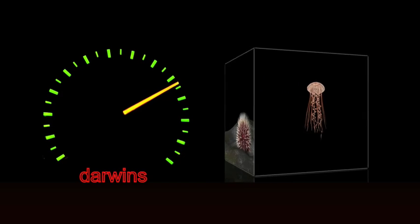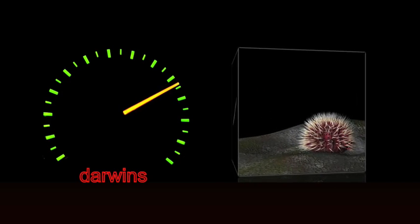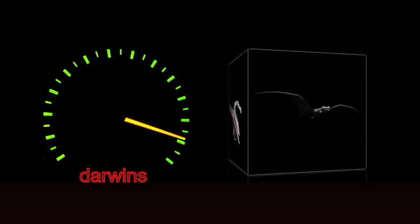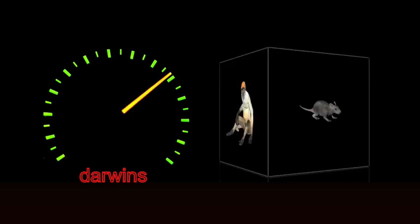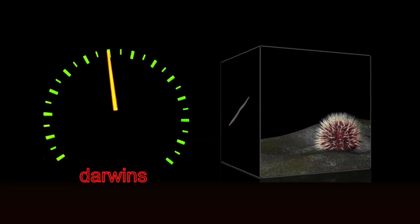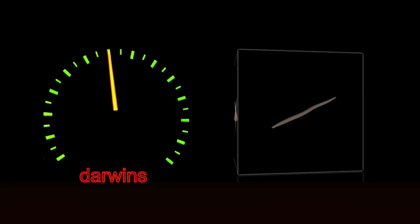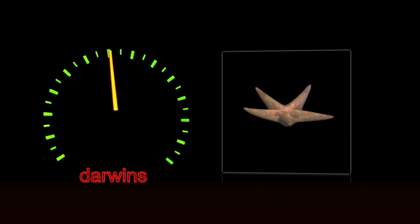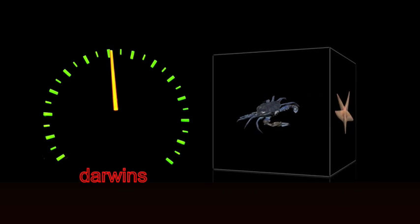Observed rates of evolution in lab experiments are even more impressive, averaging 60,000 Darwins, and as high as 200,000 Darwins, or over 6,000 times the required rate.